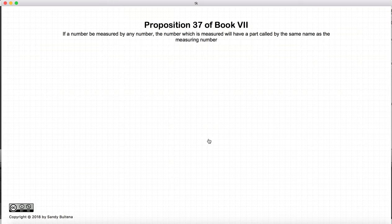Now, this proposition took me a while to decipher, and just for fun, I'm going to actually read the proposition. If a number be measured by any number, the number which is measured will have a part called by the same name as the measuring number.